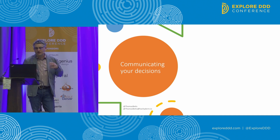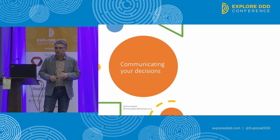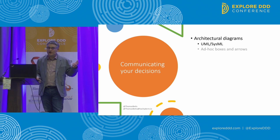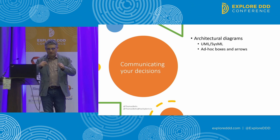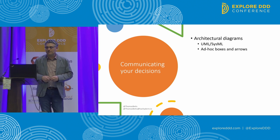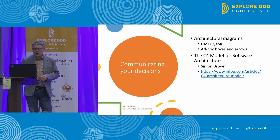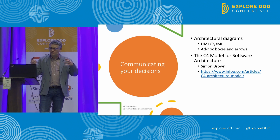Once you've evaluated your options and decided on the one you think is best, you need to communicate that decision. So what's the most effective way? It depends. It might be those diagrams — something rigid like SysML or UML, or you just draw some boxes and arrows. One of my recommendations is Simon Brown's C4 model for software architecture: a hierarchy called context, containers, components, and code.